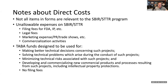Some unallowable expenses on SBIR/STTR: any kind of filing fees — FDA, intellectual property filing fees — no filing fees are allowed, and no overt legal fees. You cannot use your TABA funds for filing fees either. You can use TABA or technical assistance funds to help develop a strategy around your IP, but you can't use those funds to then file the IP. No marketing expenses, PR, or trade shows — no overt commercialization activities. TABA funds are designated for: making better technical decisions, solving technical problems that come up during the project, minimizing technical risk, and developing and commercializing new products and processes, including intellectual property protection — but no filing fees.